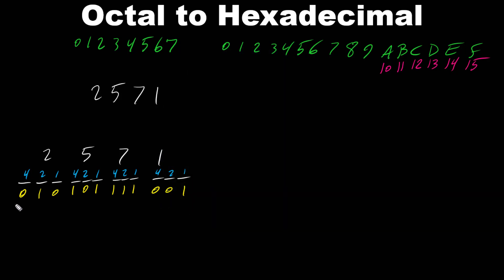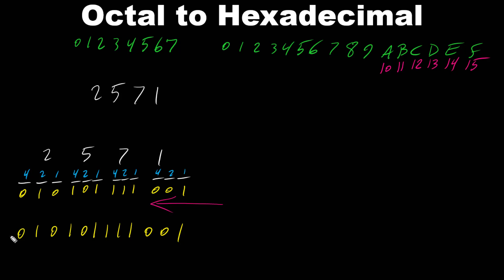Now we have our binary number. Putting the bits together: 0,1,0 | 1,0,1 | 1,1,1 | 0,0,1. Next, we count right to left every 4 bits and separate, because we are converting to hexadecimal and every hex digit uses 4 bits. Counting right to left: group of 4, separate; group of 4, separate; group of 4, separate.